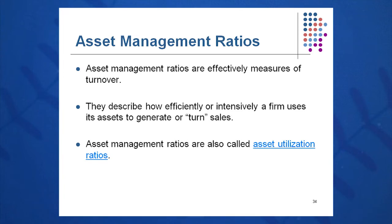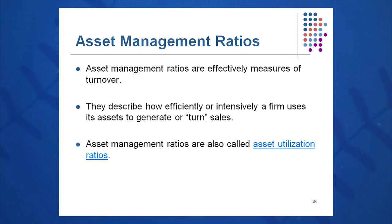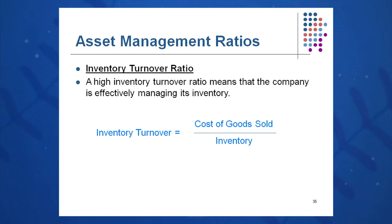Category number three is asset management ratios — also called asset utilization ratios — measuring how effectively we use assets to generate sales. We'll cover inventory management and accounts receivable management. The inventory turnover ratio asks: how quickly am I turning my inventory over? Very important in, say, the milk business — you want to turn that inventory over within the day. You don't want inventory sitting on shelves for days or weeks, which causes spoilage.